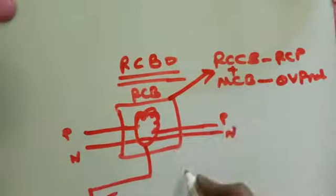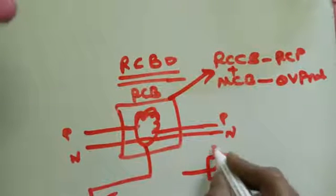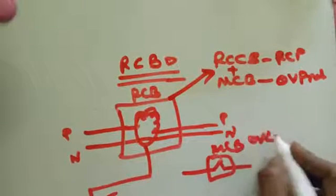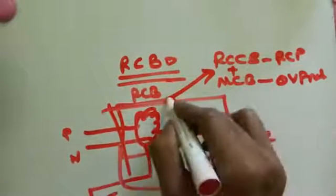Then MCB function - MCB provides over voltage protection. These two combinations are combined to make RCBO.